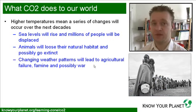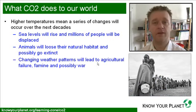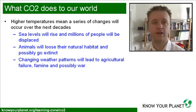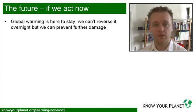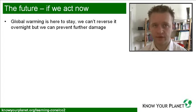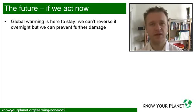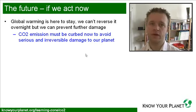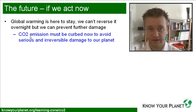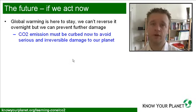These changing weather patterns will lead to agricultural failure. There will definitely be famine, and there will possibly also be war because there will be a fight for the resources which are available. So we're heading into uncharted territory. We can't reverse the global warming problem right now, but we can definitely try and prevent further damage. The CO2 emissions must be curbed to avoid serious and irreversible damage to our planet.